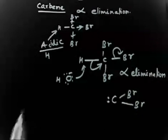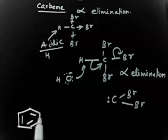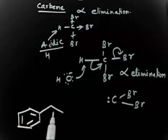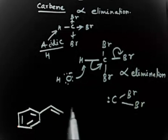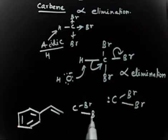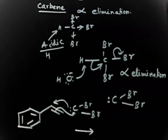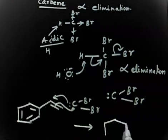Things are now very simple — I have to simply insert the carbene into the double bond. You can only insert the carbene on a double bond. So for CBr2, these electrons go here and these two electrons come here. If you follow this step you will get the desired product.